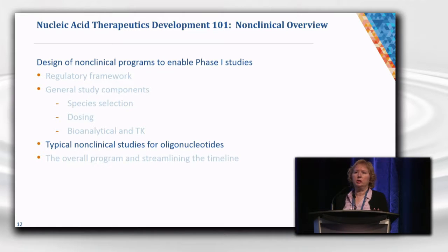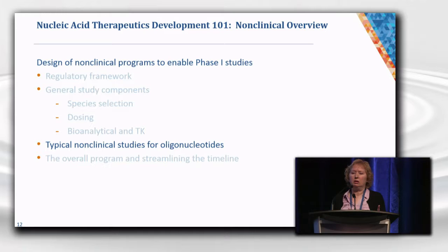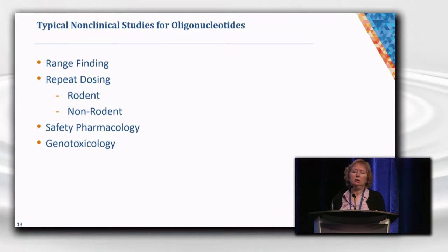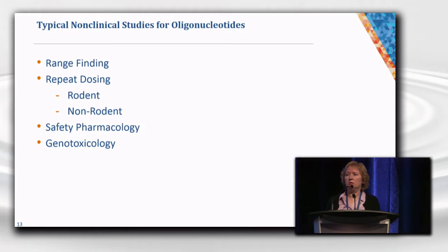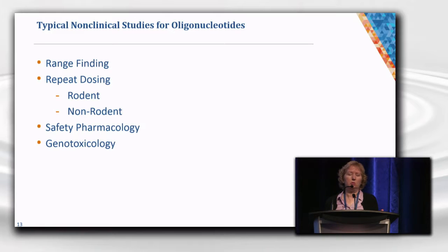Now I'm going to talk about typical studies used for oligonucleotides. You'll notice they aren't that different from what is done for a typical small molecule. We start with range-finding studies, which are important to identify an appropriate dose range for your repeat dose studies. There's a lot of flexibility — they don't need to be GLP. The idea is to identify what doses are appropriate to put into the repeat dose studies. I'll also talk about safety pharmacology and genotoxicity studies.